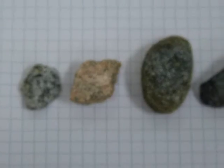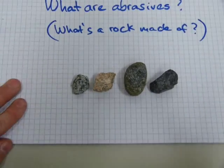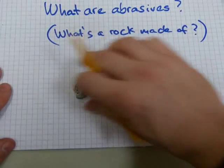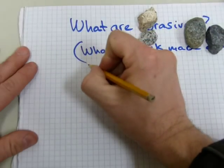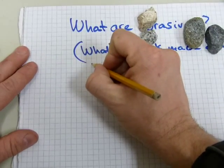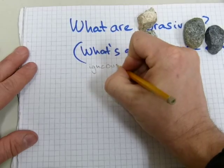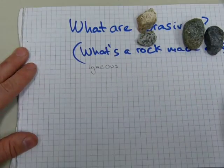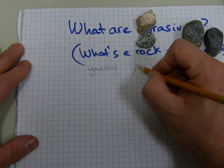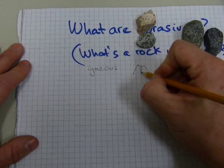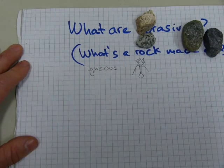All of these rock samples are samples of an igneous rock — I-G-N-E-O-U-S — igneous rock, which means it came out of a volcano's magma chamber.